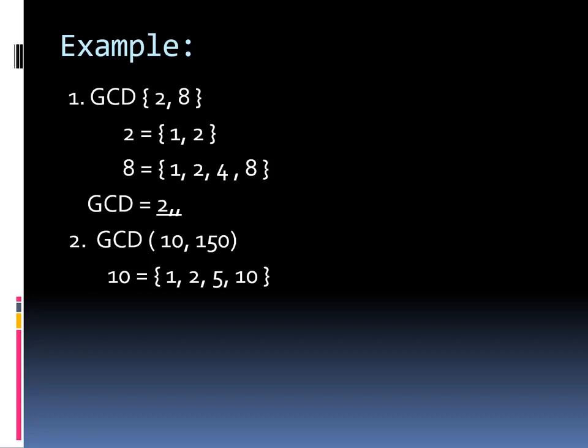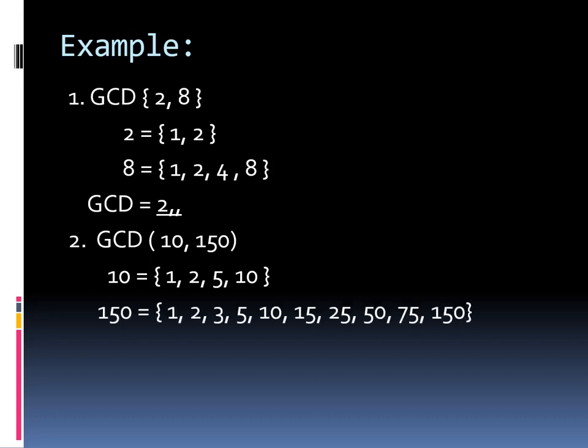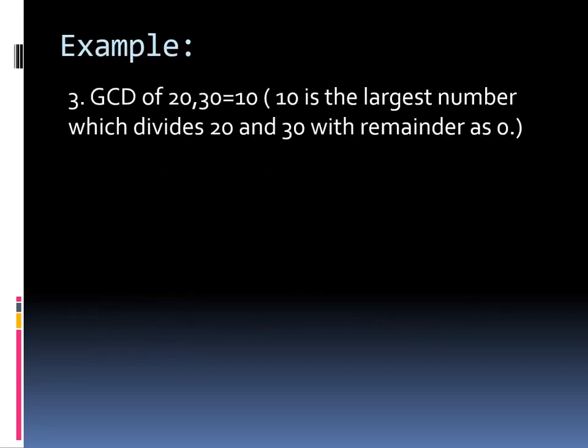Example number two: GCD of 10 and 150. Same process — for 10 we have the divisors 1, 2, 5, and 10. And for 150 we list all the divisors: 1, 2, 3, 5, 10, 15, 25, 50, 75, and 150. So obviously the greatest common divisor of 10 and 150 is 10.